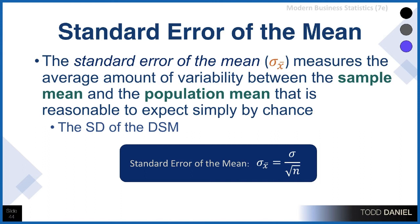The standard error of the mean is like the standard deviation for the sampling distribution of the mean. It measures the average amount of variability between a sample mean and the mean of the population that's reasonable to expect by chance. The formula for the standard error of the mean is the standard deviation of the population divided by the square root of n.